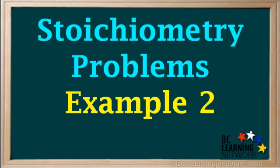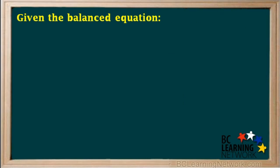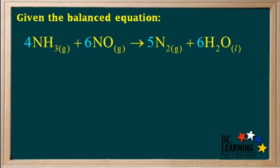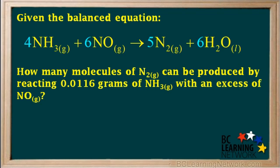Here's another example of a stoichiometry problem. Given the balanced equation, 4NH3 gas plus 6NO gas yields 5N2 gas plus 6H2O liquid, how many molecules of N2 can be produced by reacting 0.0116 grams of NH3 with an excess of NO?